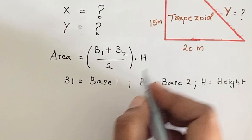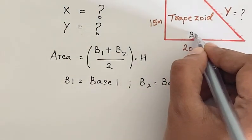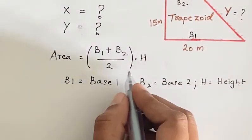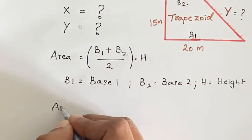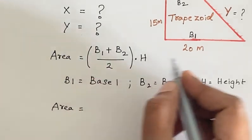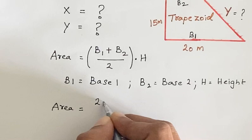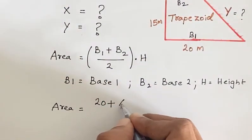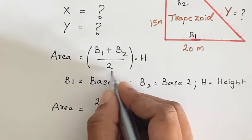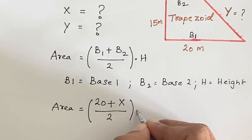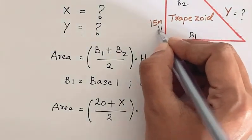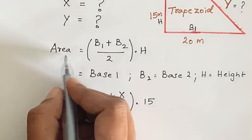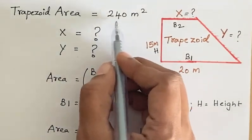In this diagram, B1 is this length, the base that is 20 meters, and B2 is this length, which is x. H is 50 meters. So the area is given by B1 is 20 meters, 20 plus B2 is x, divided by 2 times the height, which is 50 meters.